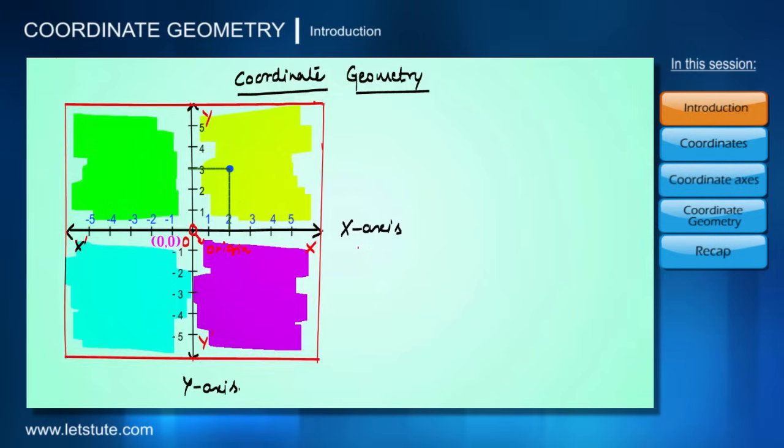This representation of the location of a point is called coordinates. The value of the x-axis is called the x-coordinate, and the value of the y-axis is called the y-coordinate. The x-coordinate is also called abscissa, and the y-coordinate is also called ordinate.